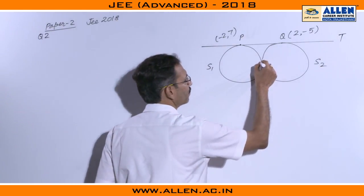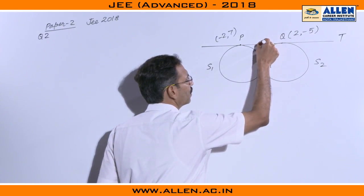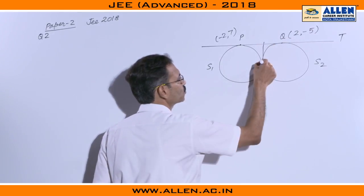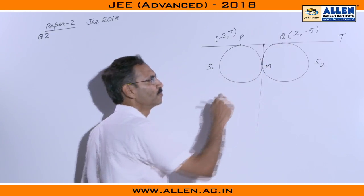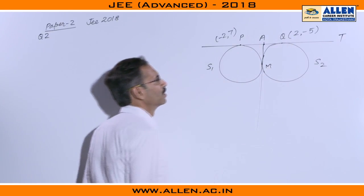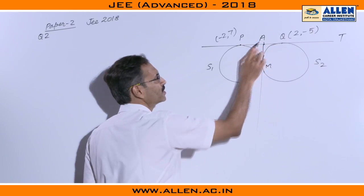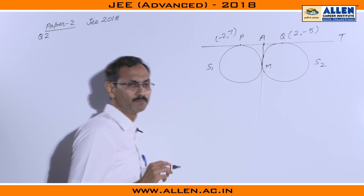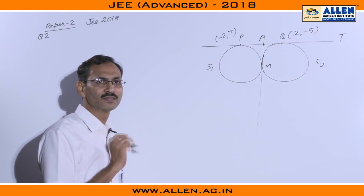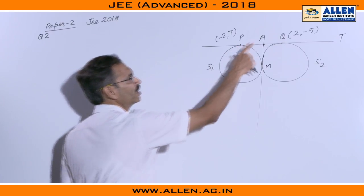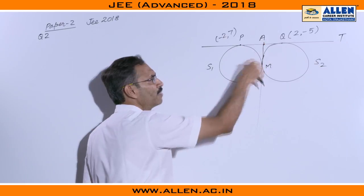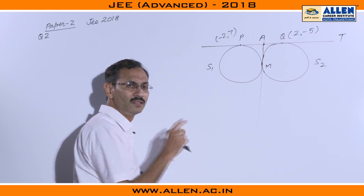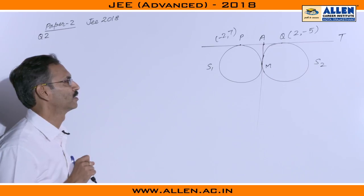For finding the locus of M if I draw a radical axis of these two circles, the radical axis is intersecting this common tangent PQ at say A. This A point is equidistant from PQ and M because we know radical axis bisects the common tangent. A is the midpoint of PQ. Simultaneously AP and AM will be equal because these are the length of tangent drawn from external point to a circle.